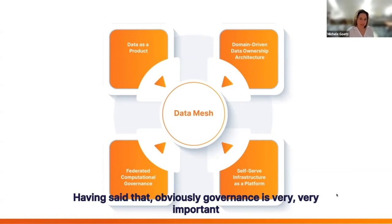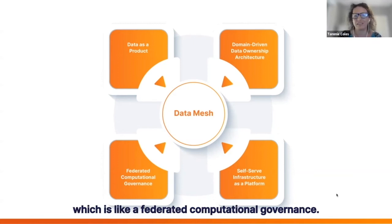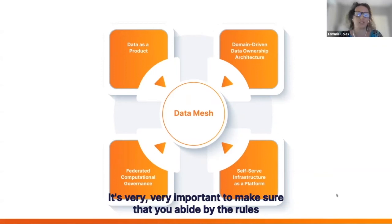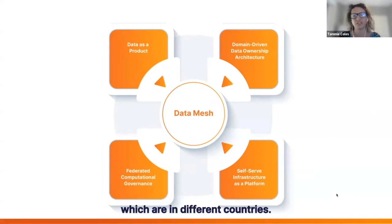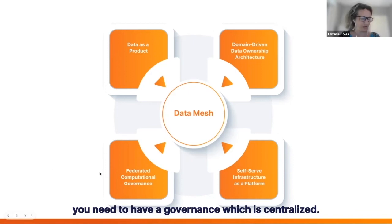Having said that, governance is very important and you still need a central governance — what is called federated computational governance. It's very important to make sure that you abide by the rules which exist in different countries. So somehow, even though you have this decentralized situation, you need to have a governance which is centralized.